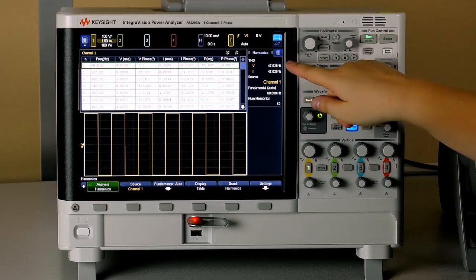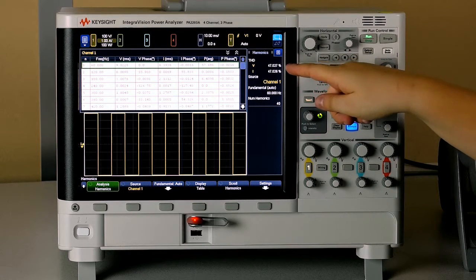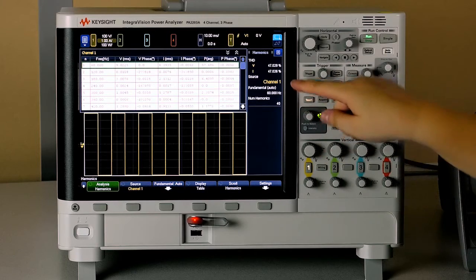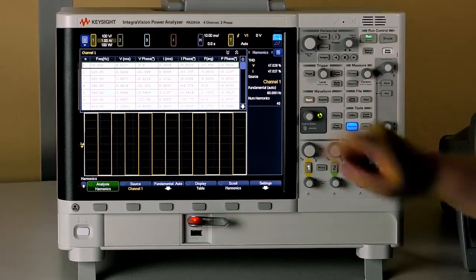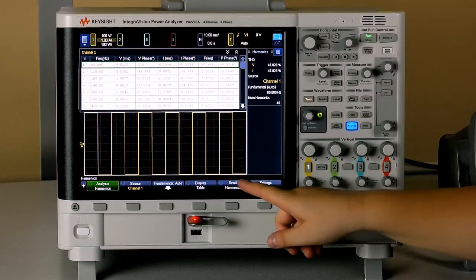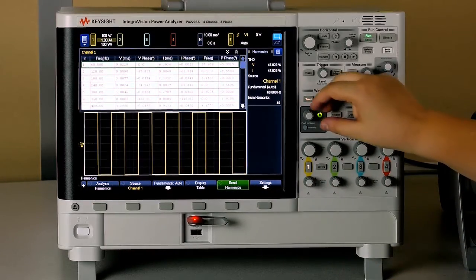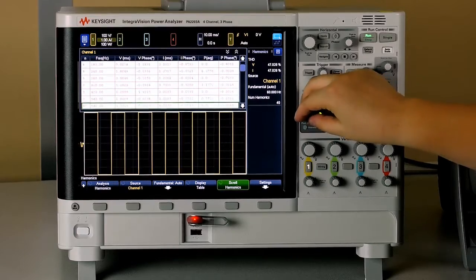Over here in the sidebar you can see the total harmonic distortion with voltage and current, the source, the fundamental frequency, and the number of harmonics that are being displayed. You can scroll through this table by hitting scroll harmonics and using this dial to move through the table.